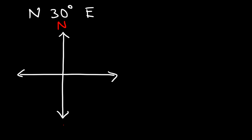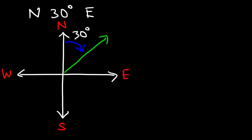Because direction is stated, the rotation may be clockwise or it may be counterclockwise. So we're going to start with the north line, and then travel 30 degrees towards the east. And so we're going to get that green line. That's all you need to do.